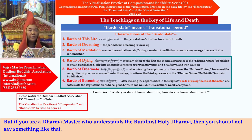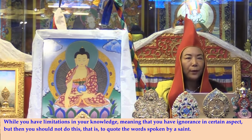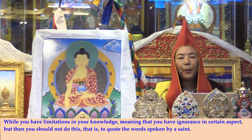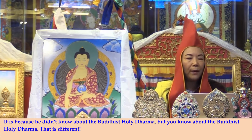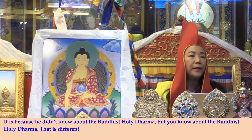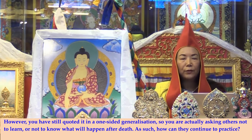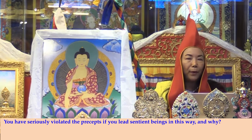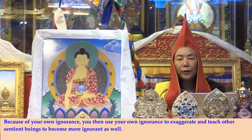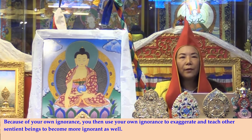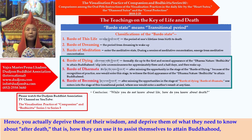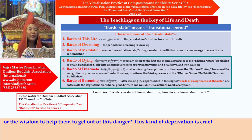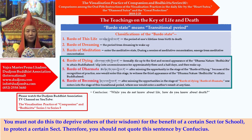But if you are a Dharma master who understands the Buddhist holy dharma, you should not say something like that. While you have ignorance in a certain aspect, you should not quote the words of a saint who didn't know about the Buddhist holy dharma to teach others not to learn what will happen after death — as such, how can they continue to practice? You have seriously violated the precepts if you lead sentient beings this way. Because of your own ignorance, you use your ignorance to teach other sentient beings to become more ignorant, depriving them of their wisdom and of what they need to know about after death. This kind of deprivation is cruel — you must not deprive others of their wisdom for the benefit of protecting a certain sect.